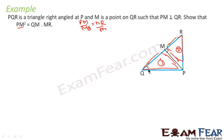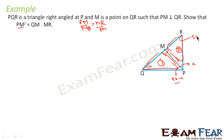If you take this angle, let's suppose A, this is 90, this angle is 90 minus A. This angle is A again because the whole thing is 90, and this angle is again 90 minus A.